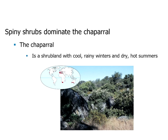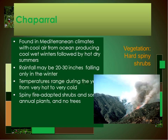Chaparral is a type of biome that I'm going to introduce because it's an important community in California in particular. Spiny shrubs dominate the chaparral. The chaparral is found in places with cool, rainy winters and dry, hot summers — we call that the Mediterranean climate. You can see from the map the areas where you can find chaparral. This chaparral is found in these Mediterranean-type climates with cool air from the ocean producing cool, wet winters followed by hot, dry summers.